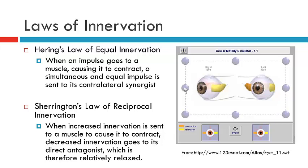Let's start off with Hering's Law. This indicates that when an impulse goes to a muscle causing it to contract, what must also happen at the same time is that the contralateral synergist, also known as the yoke muscle, must receive simultaneous and equal innervation.